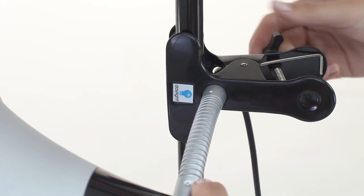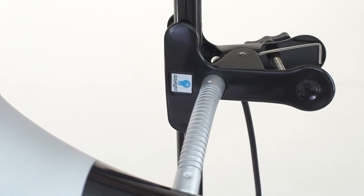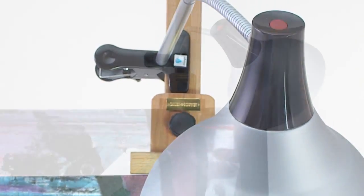The quick release clamp can be locked securely into position and can be attached to any easel up to 3cm, 1.25 inch thick.